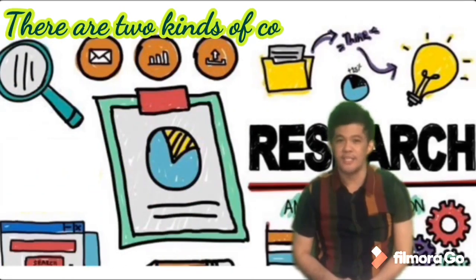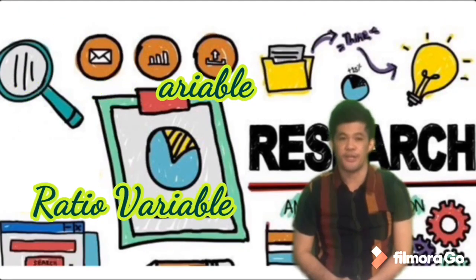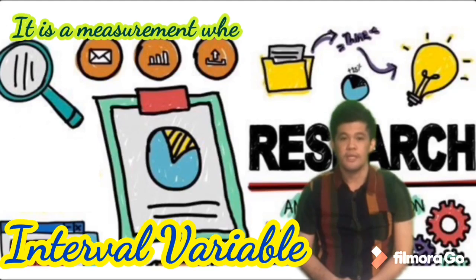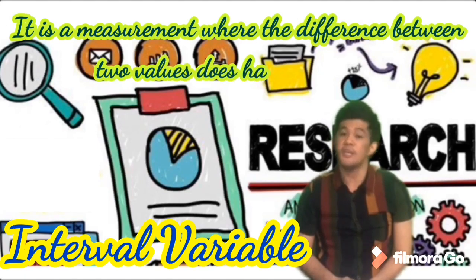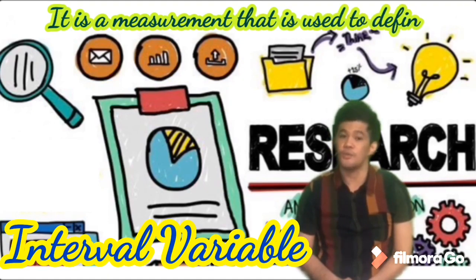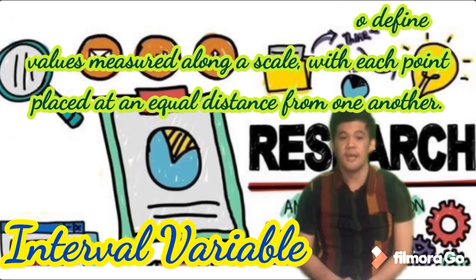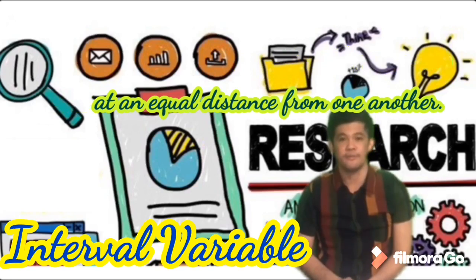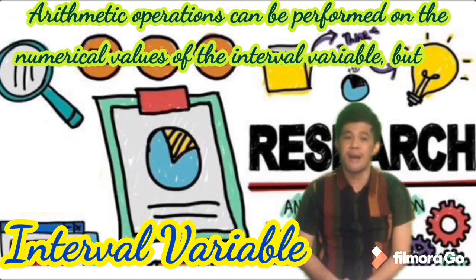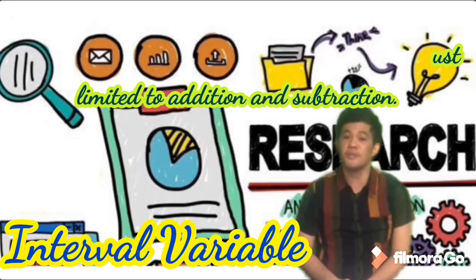There are two kinds of continuous variables: interval variable and ratio variable. The first kind of continuous variable is interval variable. It is a measurement where the difference between two values does have meaning. It is a measurement used to define values measured along a scale, with each point placed at an equal distance from one another. Arithmetic operations can be performed on the numerical values of the interval variable, but are limited to addition and subtraction.